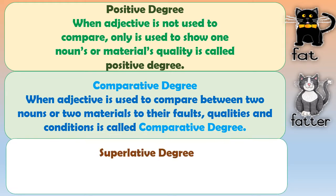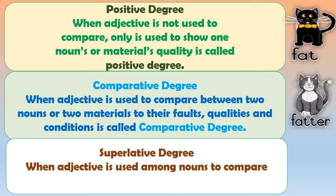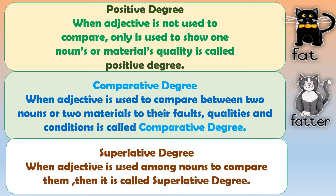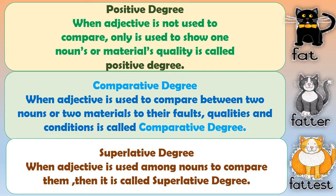The next is superlative degree. The word itself shows the meaning — super! When an adjective is used among nouns to compare them, it is called superlative degree. In the first case it was 'only one'; in the second case it was 'between' two; and 'among' means more than two. In the third picture, this cat is fattest among these three cats. Big, bigger, biggest — fat, fatter, fattest. When you compare more than two, that is the superlative degree.